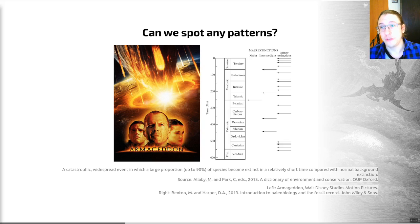One definition for a mass extinction that attempts to do this is shown on the slide. A mass extinction is a catastrophic widespread event in which a large proportion, up to 90% of species, become extinct in a relatively short time compared with normal background extinction. So in other words, it's an elevated rate of extinction with fairly large side effects.